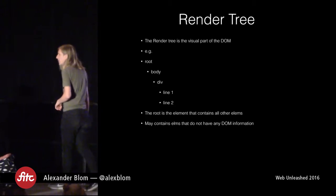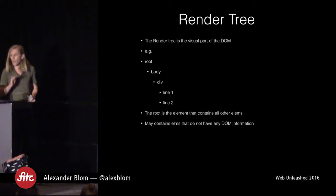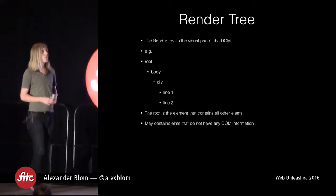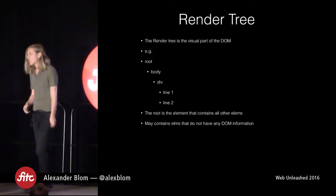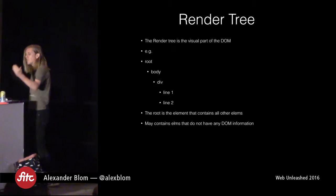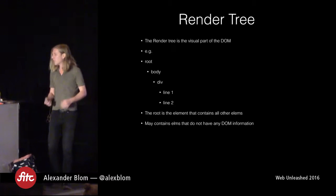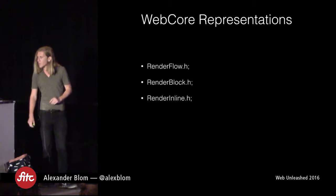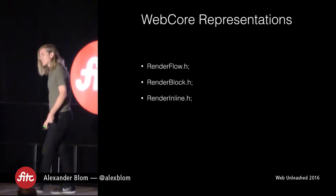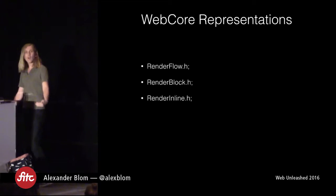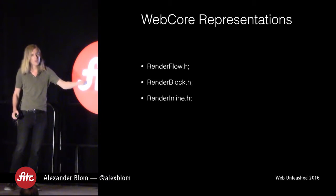The render tree is slightly different — it's the visual part of the DOM where we actually start to include content. The root element is the container for everything else, body lives inside root because we also have things like head. The WebCore representations for this are render flow, render block, and render inline — and if you've worked with CSS, you can probably see how your styles affect the classes being used under the hood.